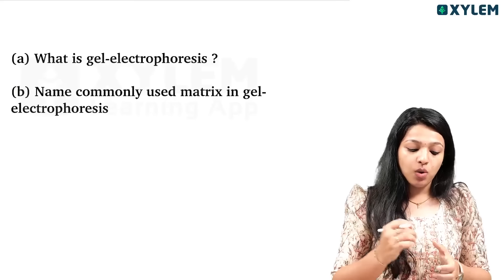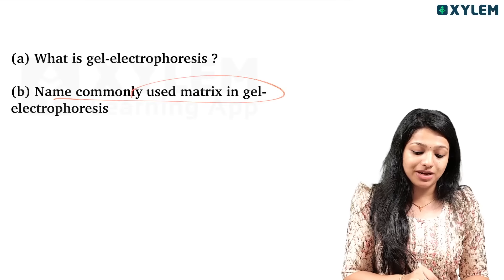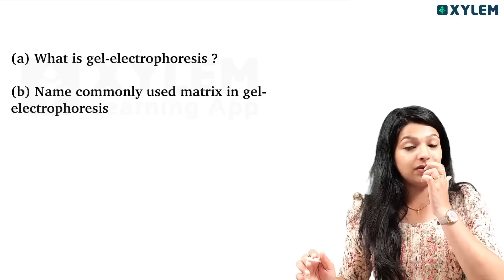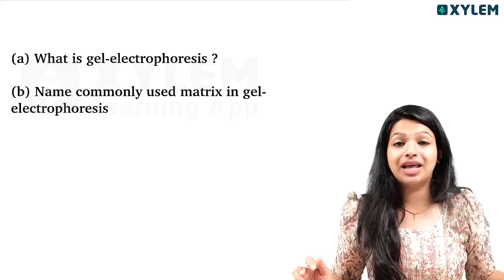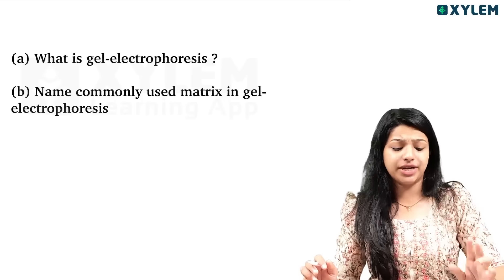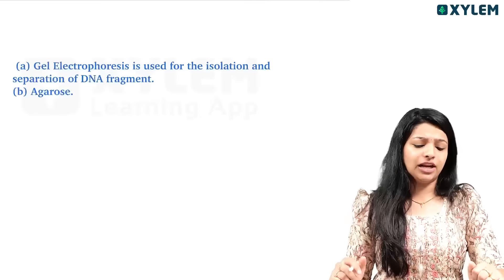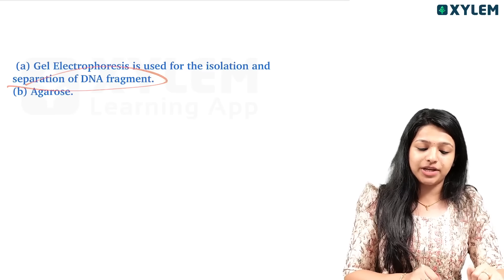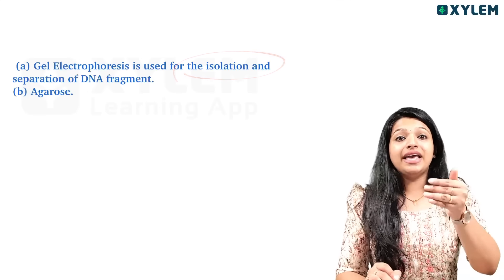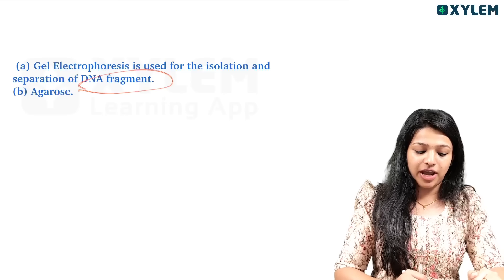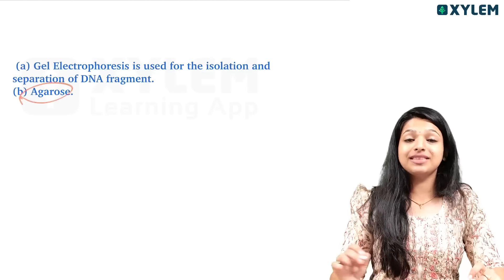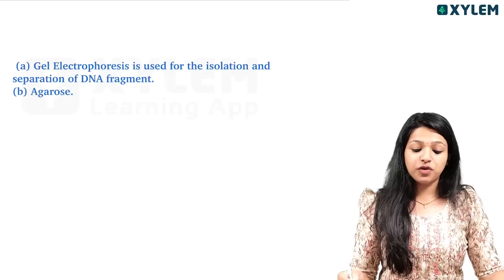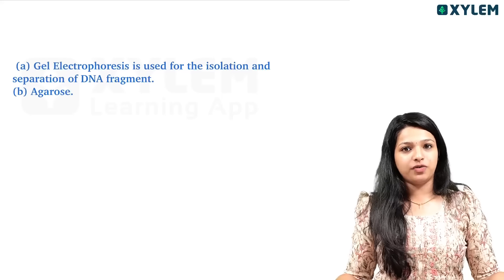Next question: What is gel electrophoresis? It is commonly used for the isolation and separation of DNA fragments. The gel used is agarose gel — it is a very important item. The use of gel electrophoresis is isolation and separation of DNA fragments.